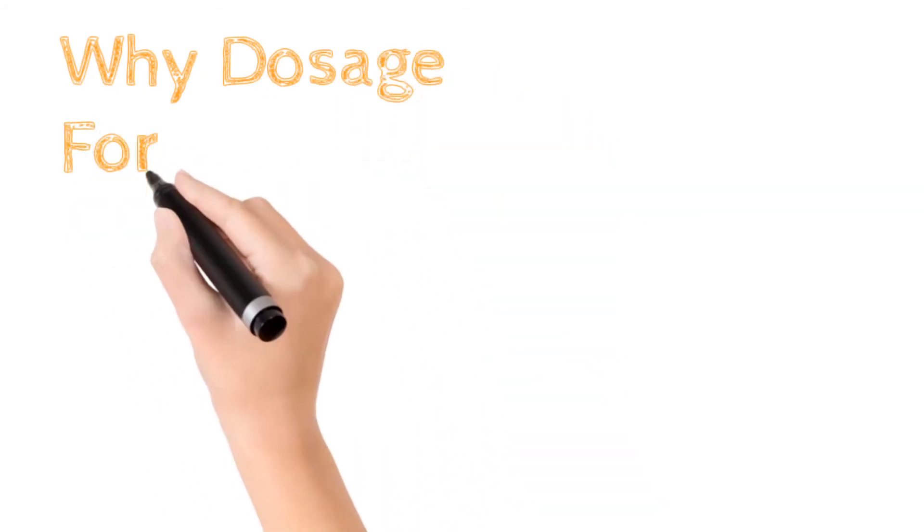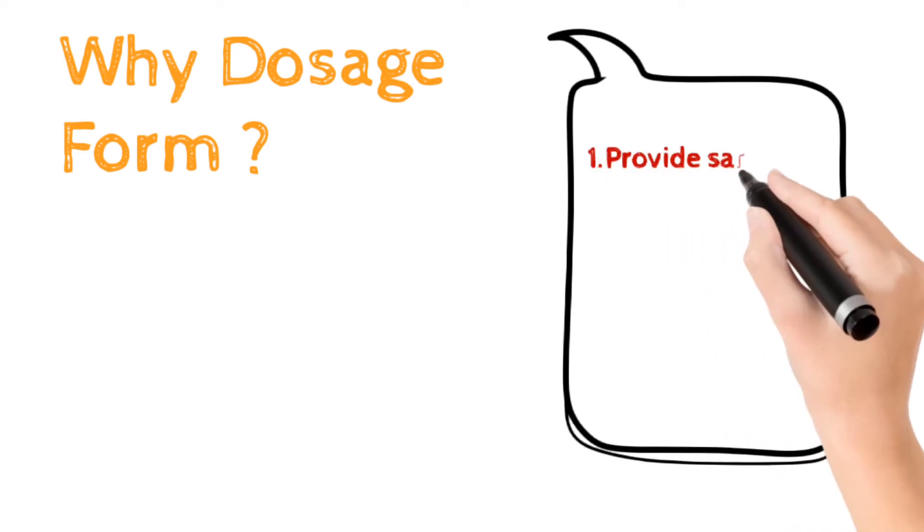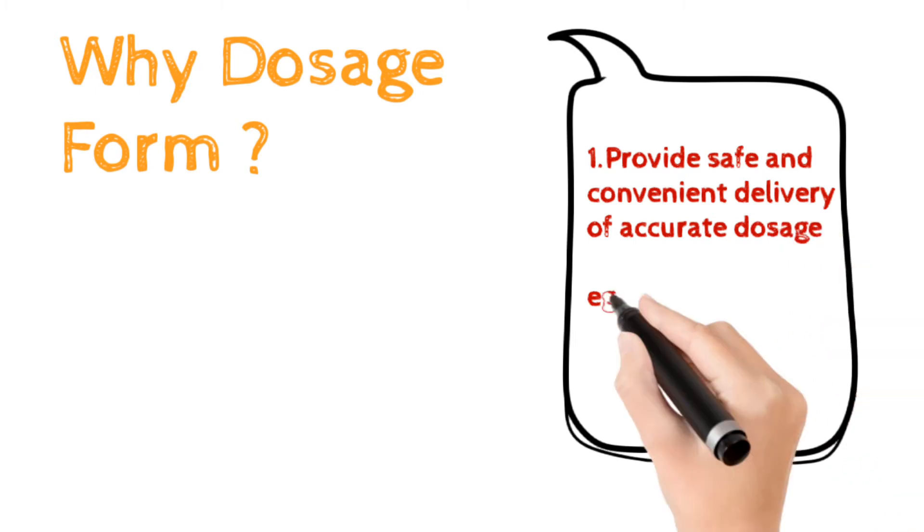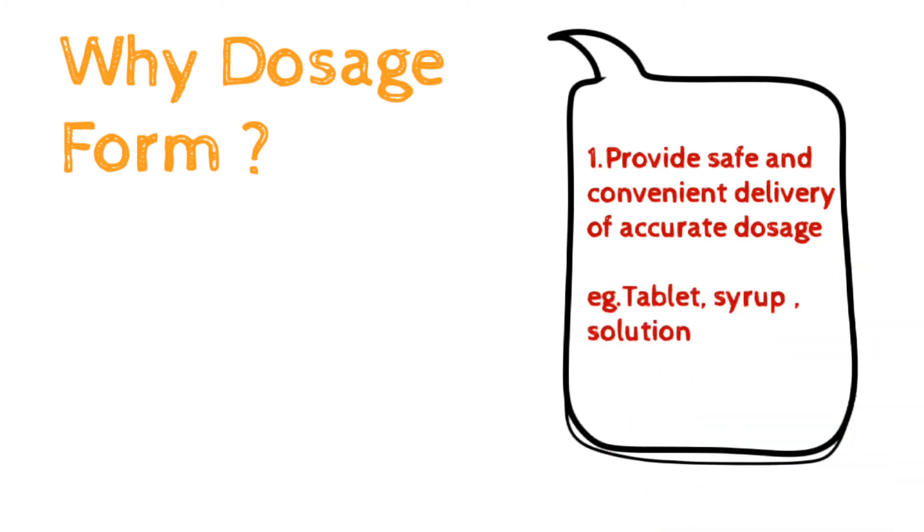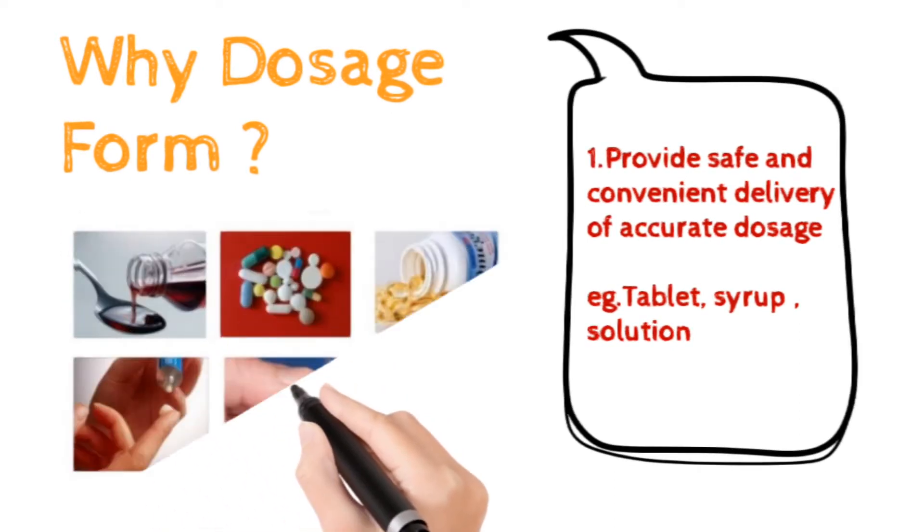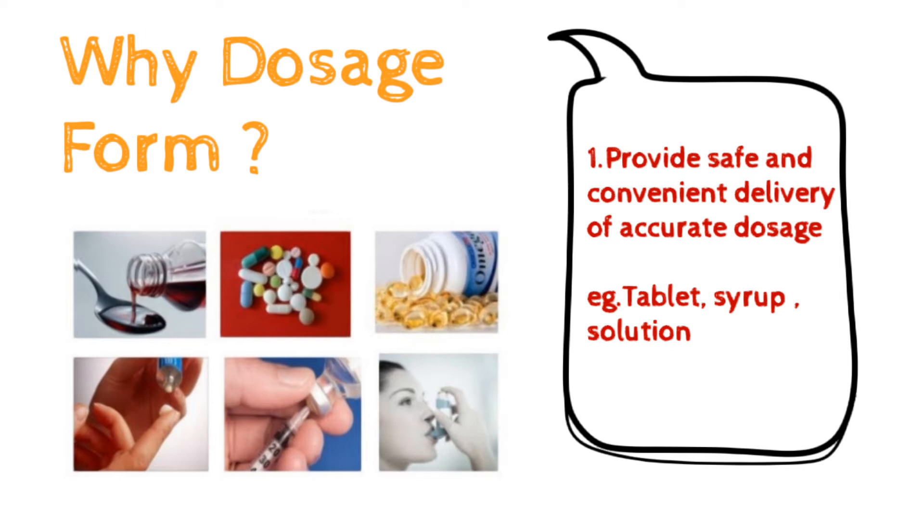Why dosage form? Why do we need dosage form? What are the needs of dosage form? There are various needs. First is to provide safe and convenient delivery of accurate dosage. If the drug is not safe and doesn't have their action, then it is not of use. Therefore, safe delivery of the drug is important. Examples are tablets and syrup. Tablets in which specific amount of drug is added with other excipients. Also in syrup, drug is suspended in various vehicles.